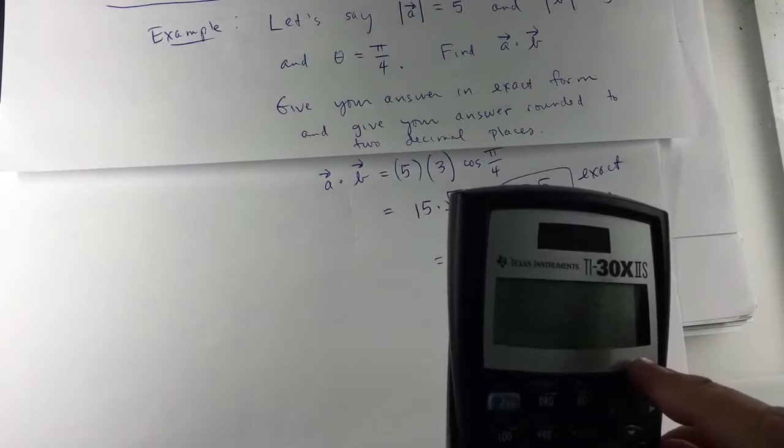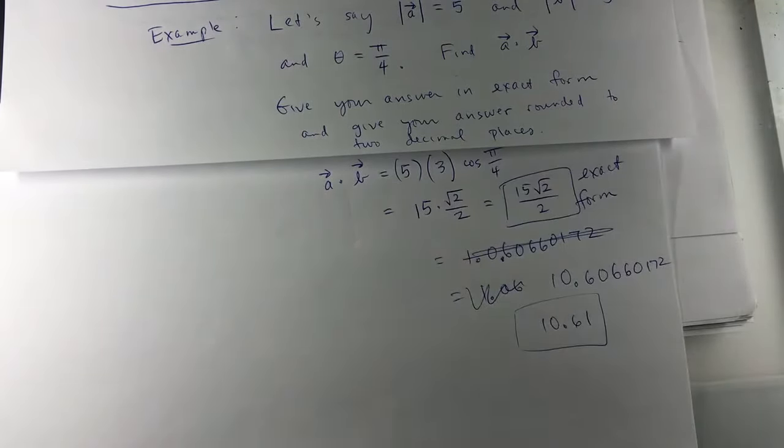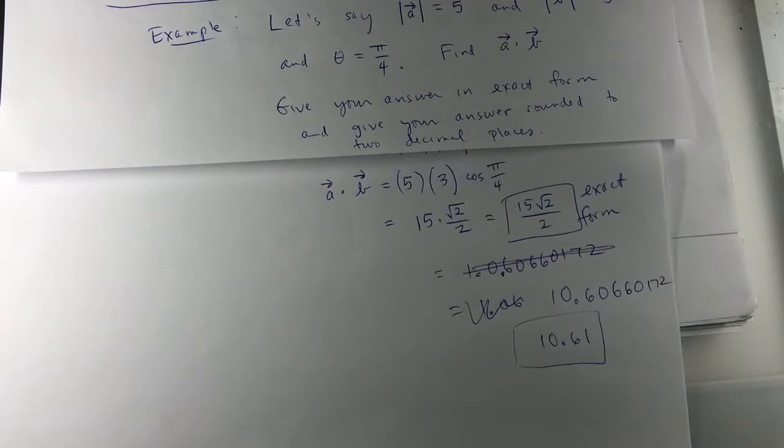Okay, and check. Well, I didn't type the cosine of π over 4 in the calculator. If I did, I'd have to make sure my calculator is in radians. And this is my estimate.